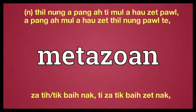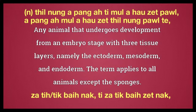Metazoan. Any animal that undergoes development from an embryo stage with three tissue layers, namely the ectoderm, mesoderm, and endoderm. The term applies to all animals except the sponges.